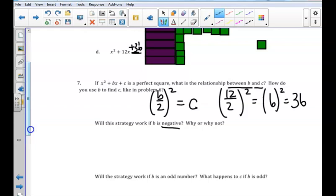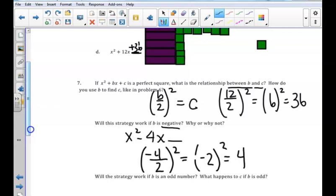Then we are asked, what if B is negative? Let's say we are provided the equation x² - 4x and we need to find C. If we apply the same rule, B is negative 4 divided by 2 squared. Negative 4 divided by 2 is negative 2. When we square it, we will get 4. So that does work when B is negative.